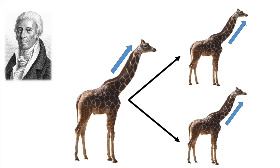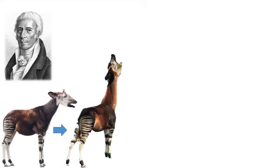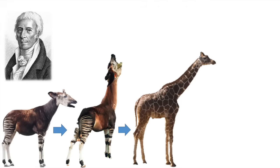And now the giraffe will pass on beneficial acquired variation to its offspring. This here is Lamarck's theory of evolution by passing on acquired variation. An okapi with a short neck stretches to eat the leaves — therefore this is an acquired variation. When the okapi's neck got so long that it became a different species, this is where speciation would take place. And Lamarck theorised that this was due to acquired characteristics.